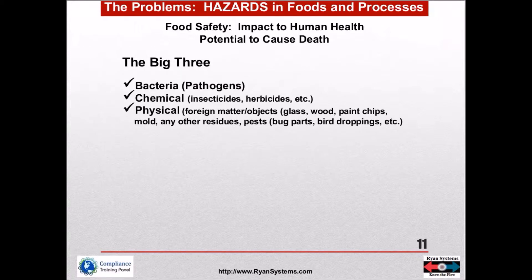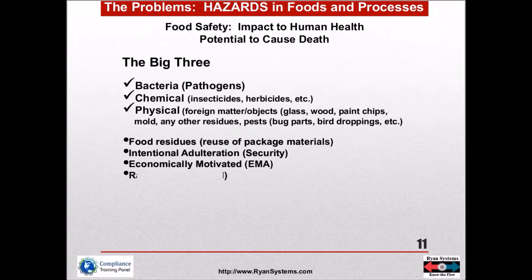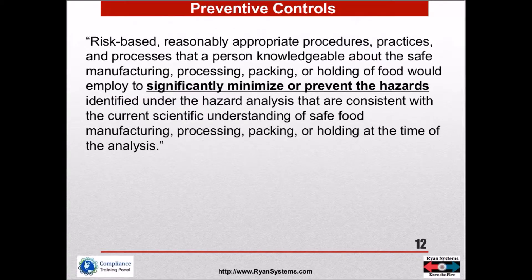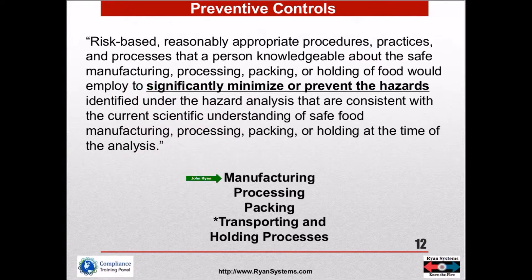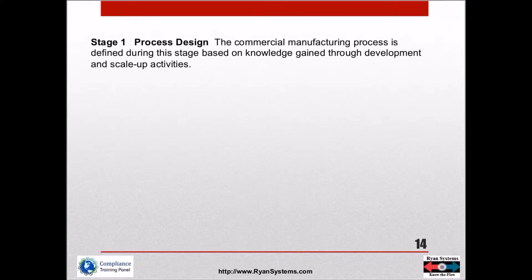We're back at our hazards — we've got the big hazard tree, but then we've got other things like food residue and intentional adulteration from FSMA — economically motivated adulteration. So we're into preventive controls here. We want to significantly minimize and prevent hazards in all these processes: manufacturing, processing, packing, transporting, and holding.